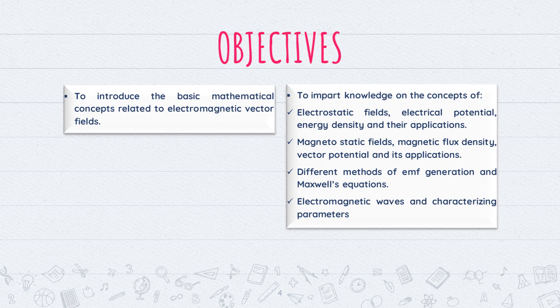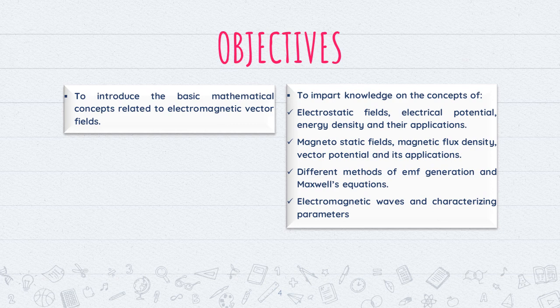In EMF, Maxwell's equation plays an important role — that means Electromagnetic Waves. The basic concept of Electromagnetic Waves is related to Maxwell's equation. That is why Maxwell's equation plays an important role before beginning Electromagnetic Waves. Finally, we are going to see the Electromagnetic Waves and their characteristics and parameters as a final topic.